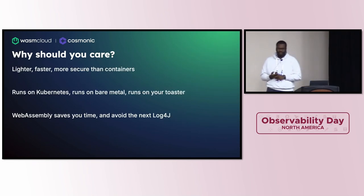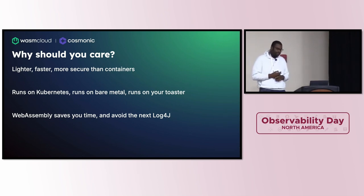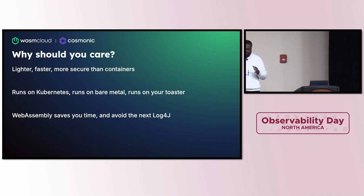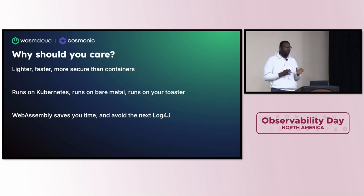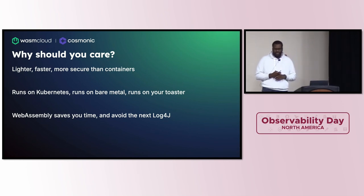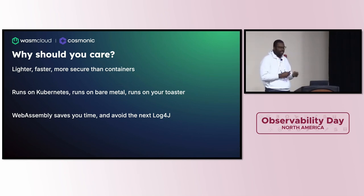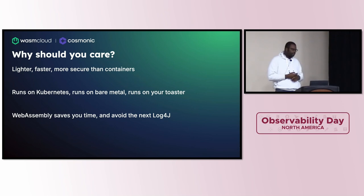So why should you care? WebAssembly is a new binary format. You may not be writing code that targets it yet, but I think in the future you will. It is lighter, faster, and in general more secure than containers. Right now we spend most of our time deploying to containers, often very large containers. WebAssembly artifacts — your compiled program — should be on the order of kilobytes, maybe megabytes. This means faster boot times and faster response times for cold starts, and just everything running faster in general.